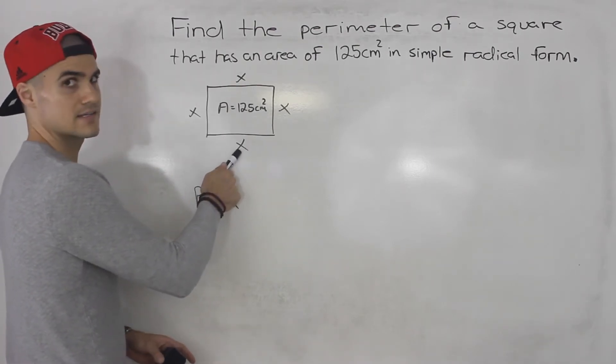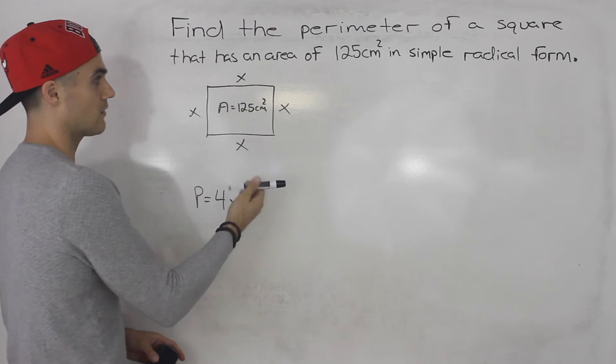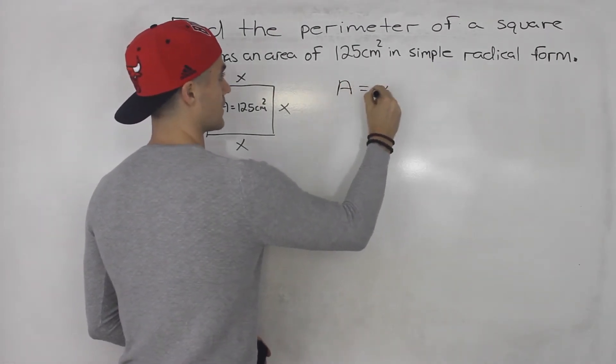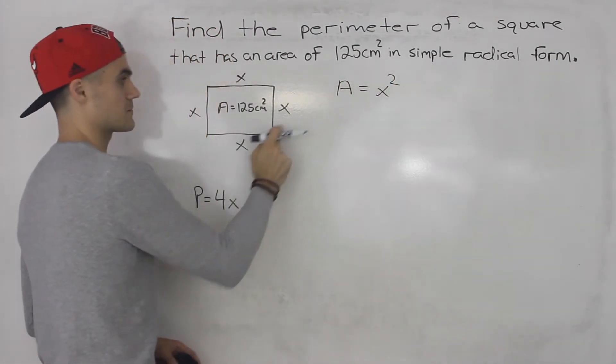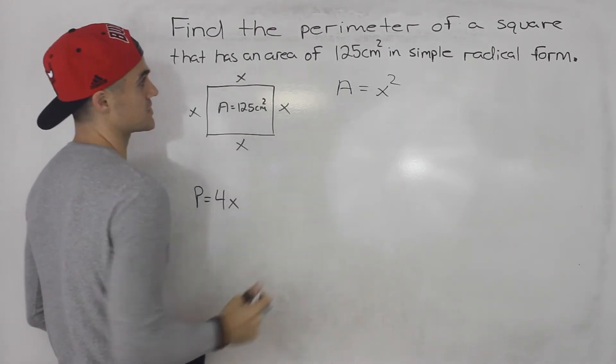How do we find this length here? Well, we know the area of a square is what? x squared. Length times width. Both of them are the same, so it's just x squared.